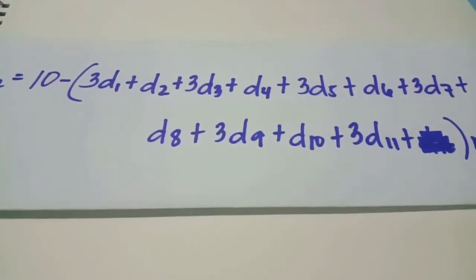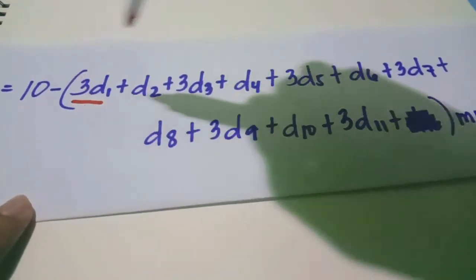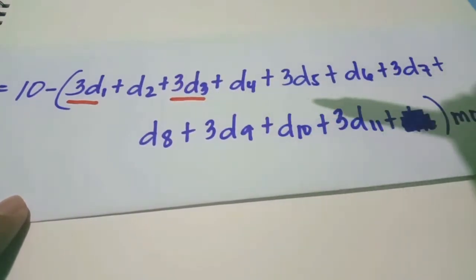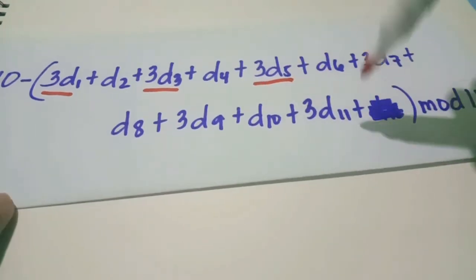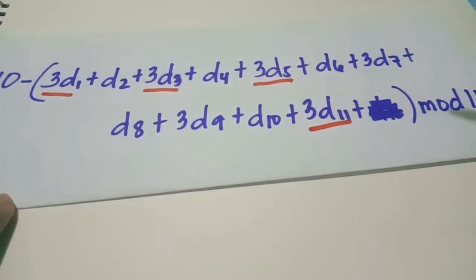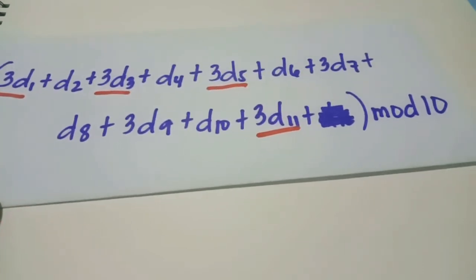So D sub 1, the position of D sub 1, is odd, so we multiply it by 3, and then followed by D sub 3, odd, then D sub 5, until D sub 11. Just like ISBN, that's modulo 10.